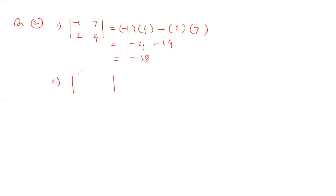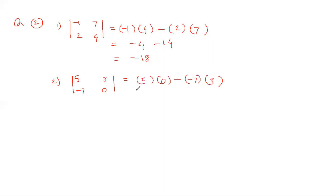The second determinant is given as 5, 3, minus 7, 0. Again, we cross multiply: 5 multiply by 0, minus 7 multiply by 3. So 5 times 0 is 0, minus minus gives plus, and 7 times 3 is 21. So 0 plus 21 equals 21. That is our answer.